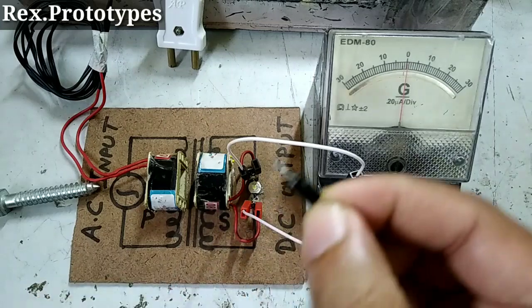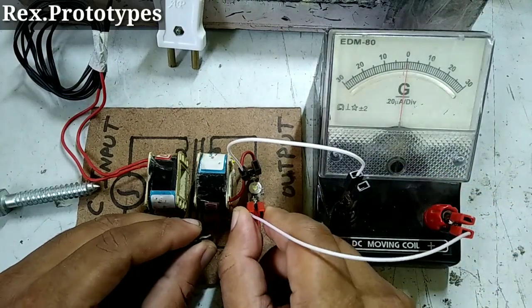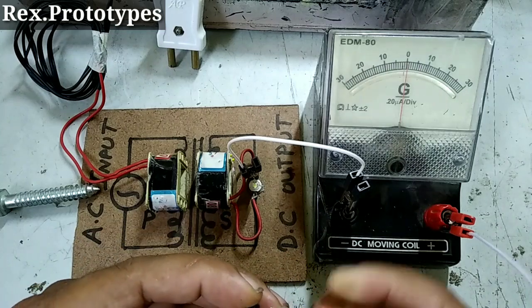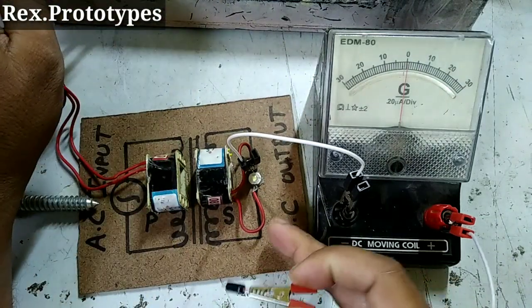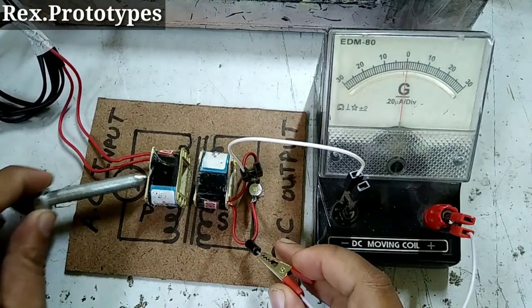Now, we will use this diode here, like this and again I will give the power supply and insert the soft iron core.